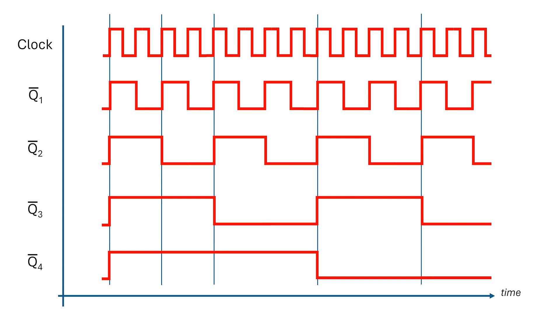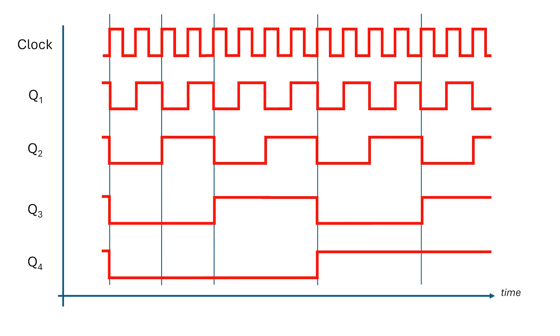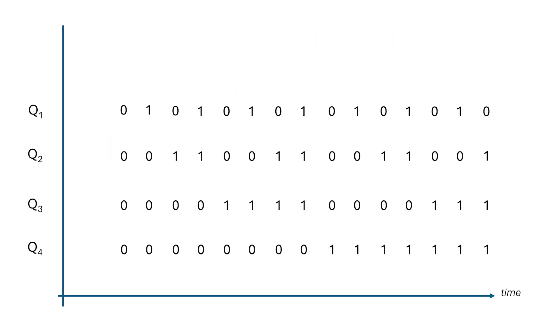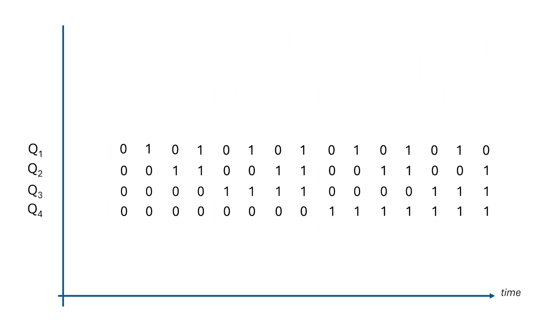We know that the Q outputs are the opposite of Q-bar, so let's switch to these and label all the actual levels. I'll remove the traces, and what we're left with is a binary count, just like we had in episode 1.